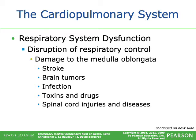Respiratory system dysfunction includes disruption of respiratory control through damage to the medulla oblongata. This occurs in stroke, brain tumors, infection, ingestion of toxins or drugs, high spinal cord injuries, and other diseases. The medulla oblongata is part of your brain where your respiratory centers are located — it plays a big part in respiratory control.